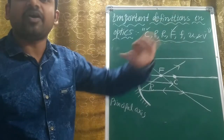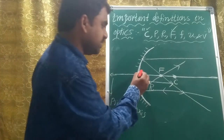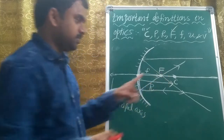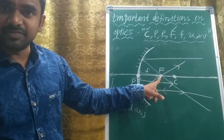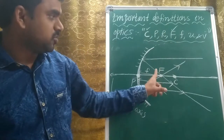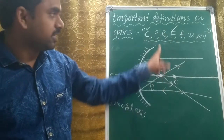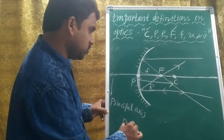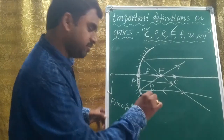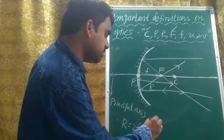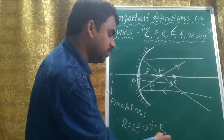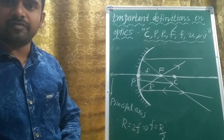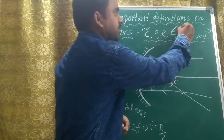What is F? Focal length means the distance from the pole to the focus, and that is called focal length. The relation between R and F is: R equals 2F, which means F equals R divided by 2. This is the relation between the radius of curvature and the focal length.